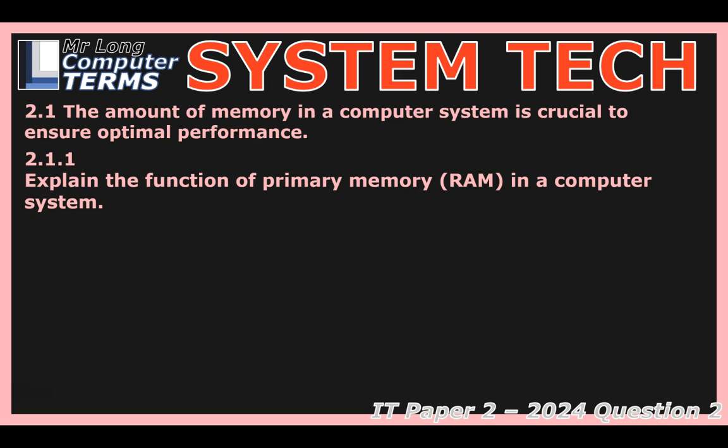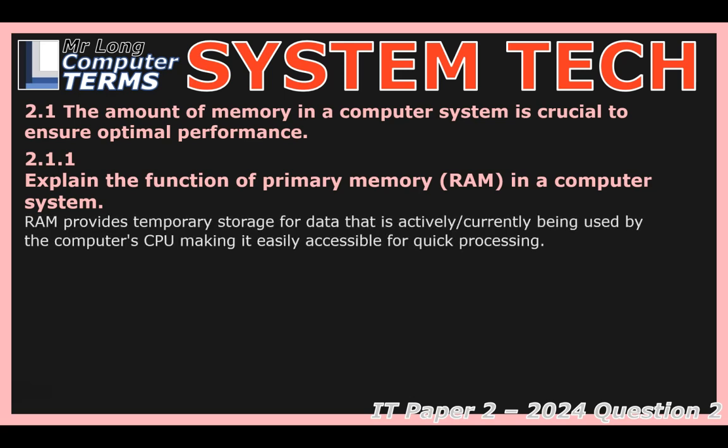RAM — random access memory — is basically temporary storage for data the CPU, the processor, is actively using right now. Think of it like the CPU's short-term scratch pad. It's vital because it gives instant access to the data the CPU needs. If there isn't enough RAM, the CPU just sits there waiting, and that's what causes those slowdowns.